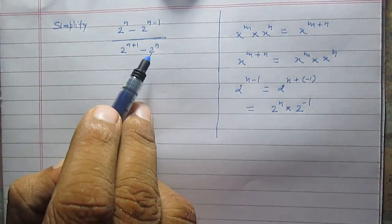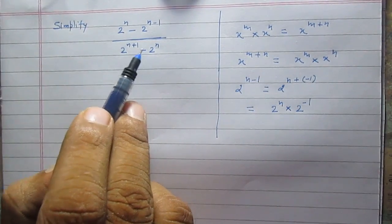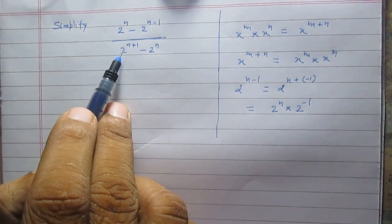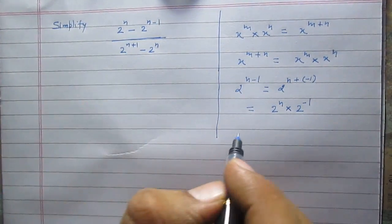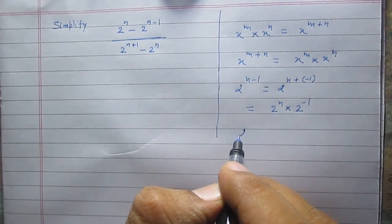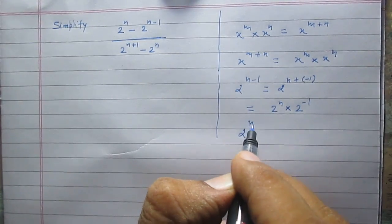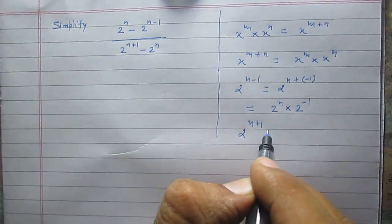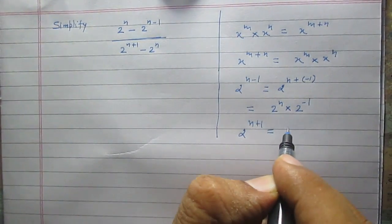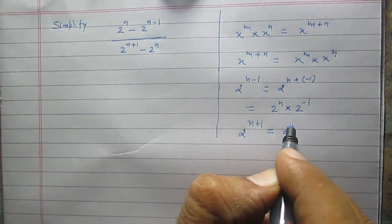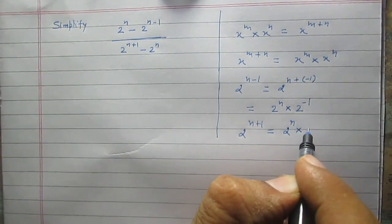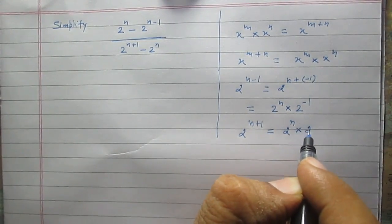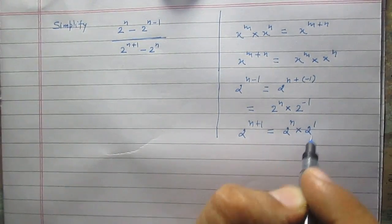Similarly, in the denominator, we have 2 raised to the power n plus 1. So 2 raised to the power n plus 1 we can simply write as 2 raised to the power n multiplied by 2 raised to the power 1.